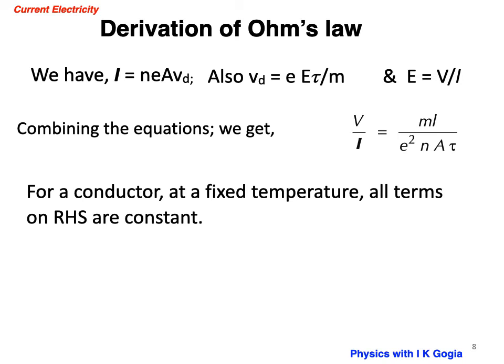For a conductor at a fixed temperature, all terms of right hand side are constant. If the temperature is fixed, M is mass of electrons will remain constant under all circumstances. L is length, does not change because the temperature is fixed. E is electron charge and number density of free electrons in a conductor, area of cross-section, and tau the mean free time. When the temperature is fixed, all terms of right hand side are fixed, therefore V over I is constant, which is Ohm's law.